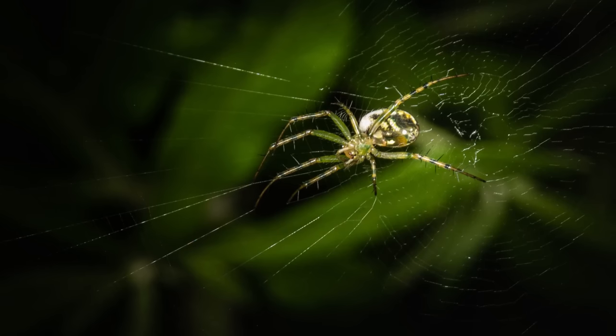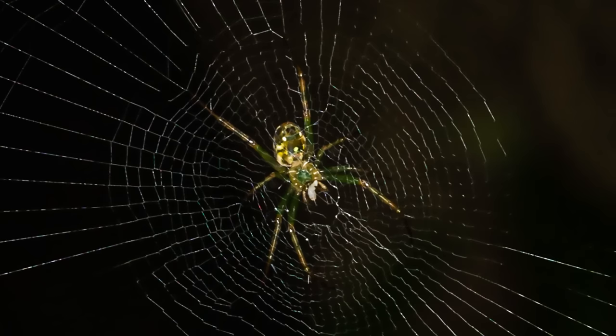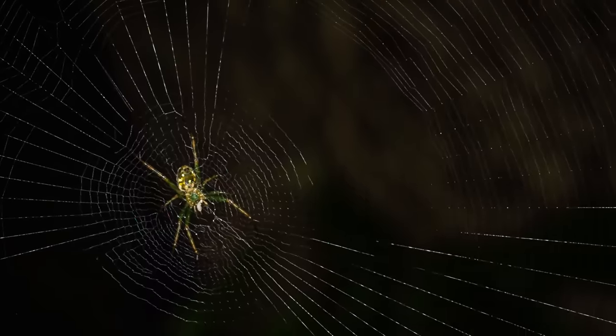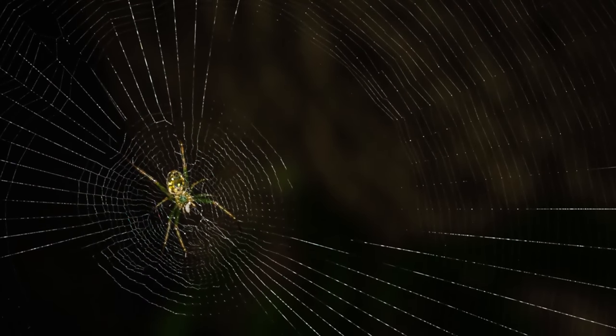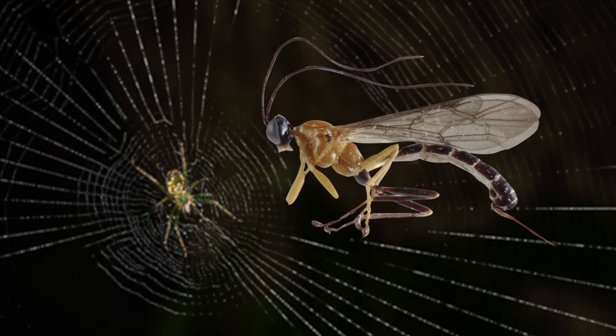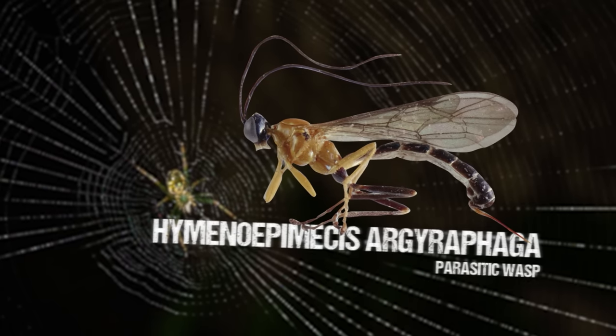Take, for example, Plesiometa argyra. This poor spider is routinely chosen to play an unwitting and unhappy support role, raising the young of a certain parasitic wasp, whose breeding habits read like something out of a horror film.